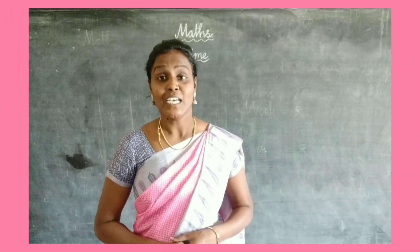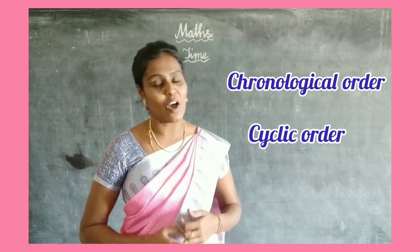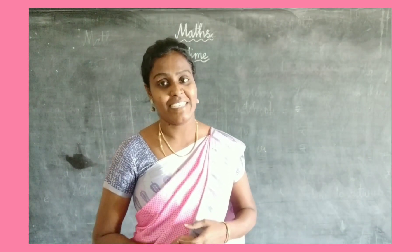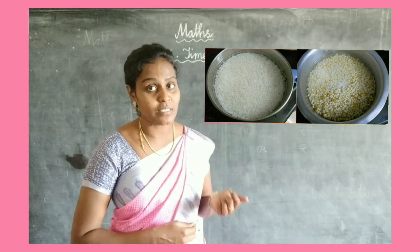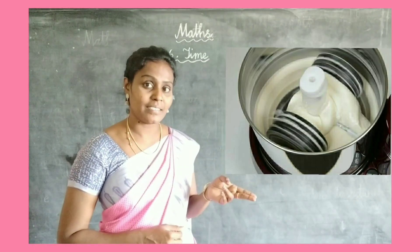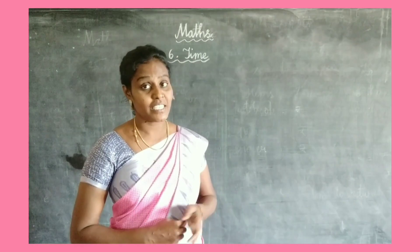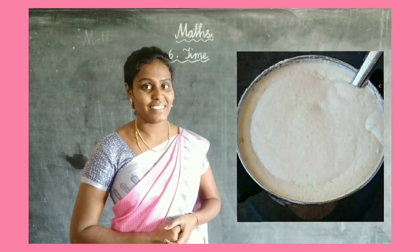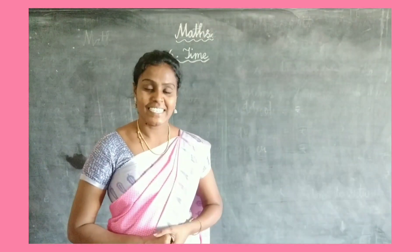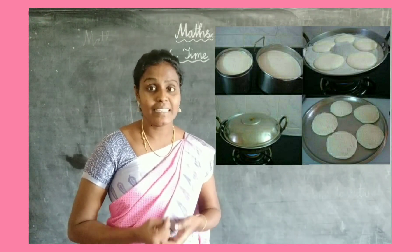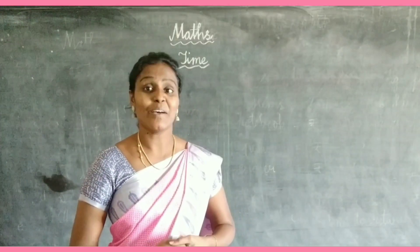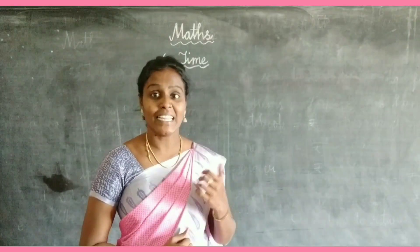Children, let's read about chronological order and cyclic order. Have you noticed when your mother prepares idli? First, she soaks rice and black gram in water. Second, she grinds them to prepare a batter. Third, she ferments the batter overnight. Fourth, she boils the batter to make idli. These events occur in an order in the process of making idli. Chronological order is the method of arranging events in the order of their happenings.